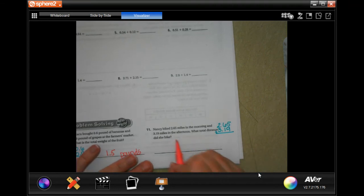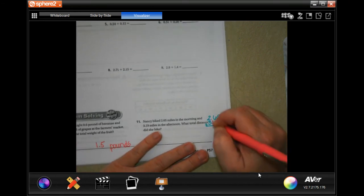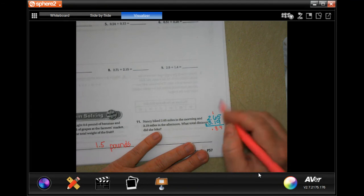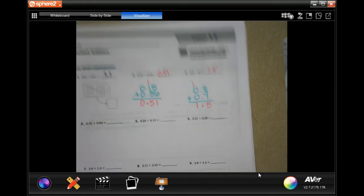Nancy bites two point six five miles in the morning and three point one nine miles in the afternoon. What is the total distance did she bike? So drop our decimal. Five plus nine is fourteen, carry a one. One plus six is seven, plus one more is eight. Two plus three is five. So five point eight four, and it's being measured in miles. We're going to flip it over.